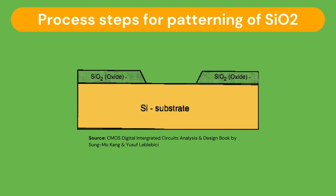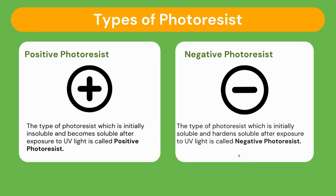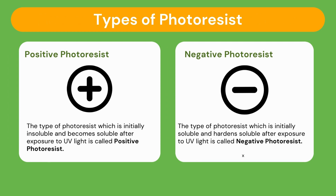We can use this example to understand lithography and the patterning process as we move on to explain the fabrication process of NMOS transistors. The type of photoresist discussed in this video is the positive photoresist, which is initially insoluble and becomes soluble after exposure to ultraviolet light. There is another type of photoresist which is initially soluble and becomes hardened after exposure to UV light, and it's called negative photoresist.